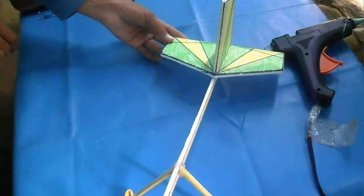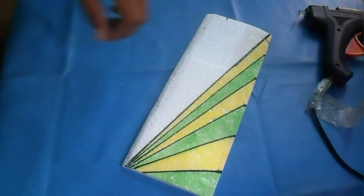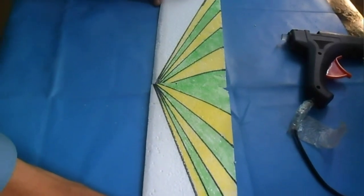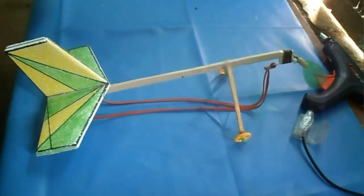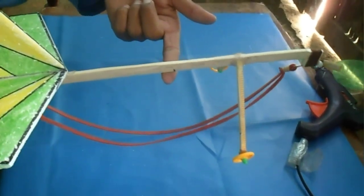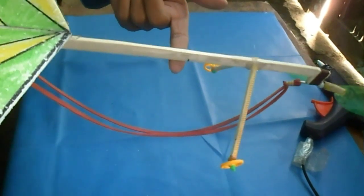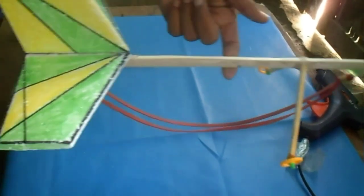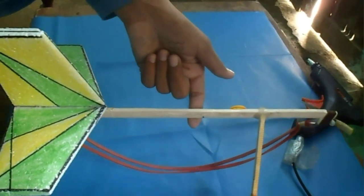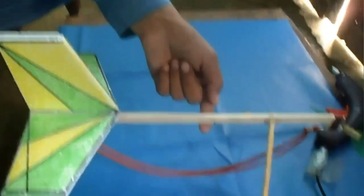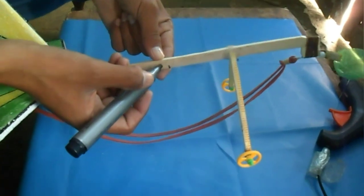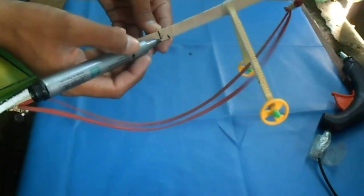First we assemble the airfoils, then the tail. Now find the center of gravity like this. This point is the balanced point, so draw a line. This is the perfect CG.